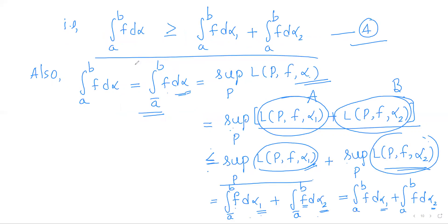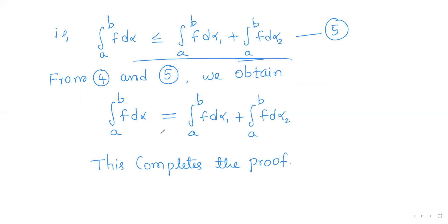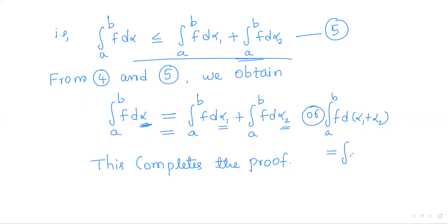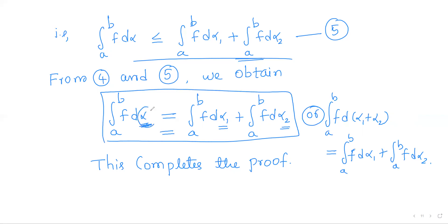Comparing the two inequalities: the RS integral ≥ ∫f dα₁ + ∫f dα₂ (from the upper integral argument) and ≤ ∫f dα₁ + ∫f dα₂ (from the lower integral argument). Hence equality holds: ∫f d(α₁ + α₂) = ∫f dα₁ + ∫f dα₂. Since α = α₁ + α₂, this completes the theorem.